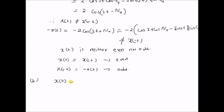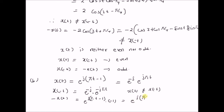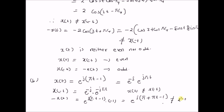Given the signal x(t) = e^(j(πt−1)), which equals e^(−j)·e^(jπt). Then x(−t) = e^(−j)·e^(−jπt). Clearly, x(t) ≠ x(−t). And −x(t) = −e^(j(πt−1)), which equals e^(j)·e^(j(πt−1)), giving e^(j(π + πt − 1)), which is clearly not equal to x(−t). Therefore, x(t) is also neither even nor odd.